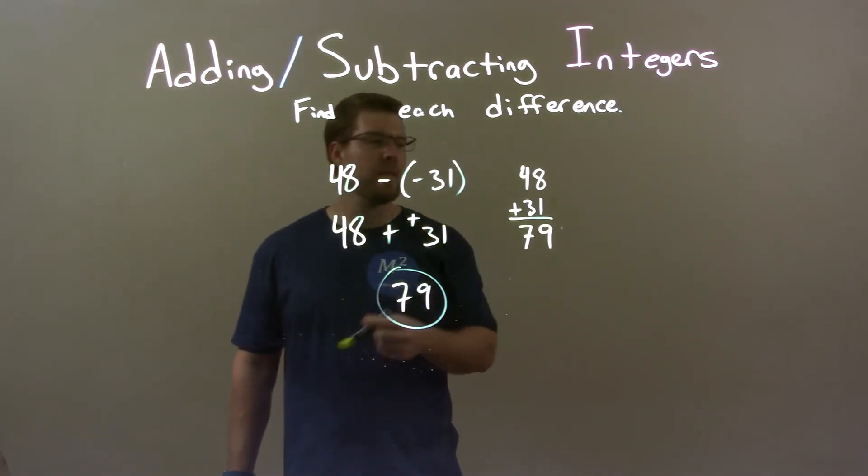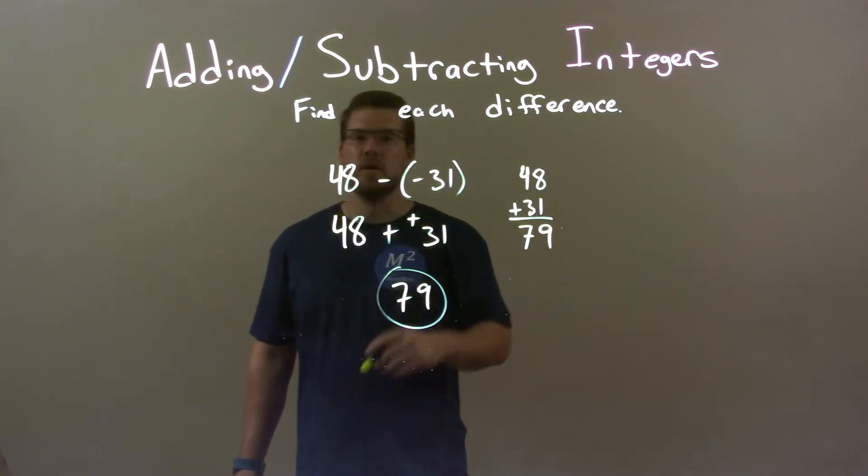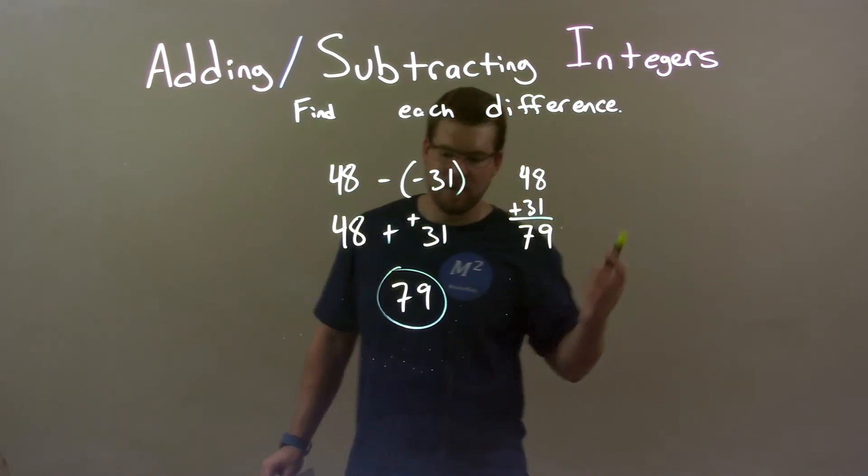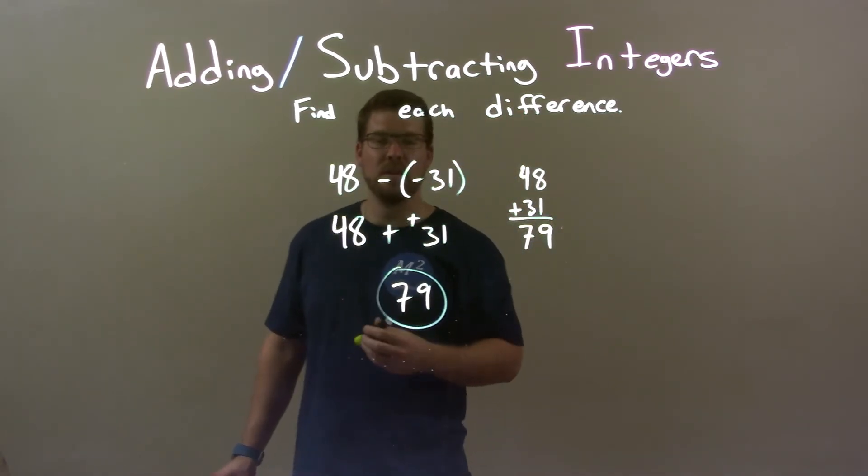So, then I have 48 plus 31. I did it the traditional way, which gave me 79. So, again, our final answer is 79.